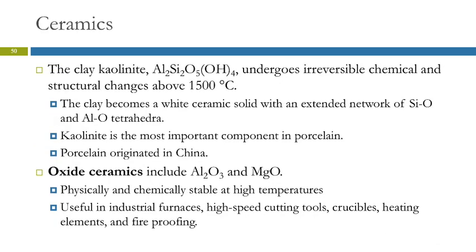One clay called kaolinite has a complex formula — it contains aluminum, silicon, oxygen, and hydroxides. Above about 1500 degrees, it undergoes irreversible chemical and structural changes and becomes a white ceramic solid with an extended network of silicon-oxygen and aluminum-oxygen tetrahedra — like the silicate structure, but with some silicons replaced by aluminum. Kaolinite is the most important component in porcelain.